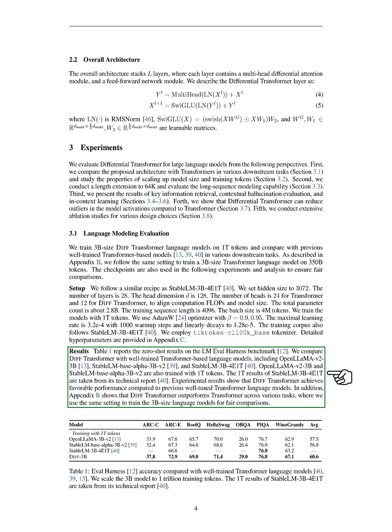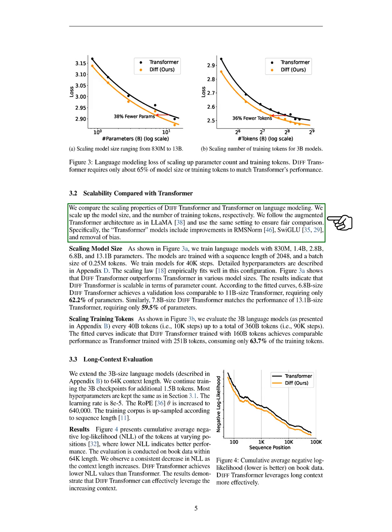Section Scalability Compared with Transformer. In this section, we compare the scalability of DIFF transformer and transformer in language modeling. We increase both the model size and the number of training tokens, using the augmented transformer architecture similar to LAMA for a fair comparison. The transformer models we use include enhancements like RMSNORM, SWEGLUE, and the removal of bias. For scaling model size, we train language models with various parameter counts: 830 million, 1.4 billion, 2.8 billion, 6.8 billion, and 13.1 billion. Each model is trained with a sequence length of 2048 and a batch size of 250,000 tokens for 40,000 steps.